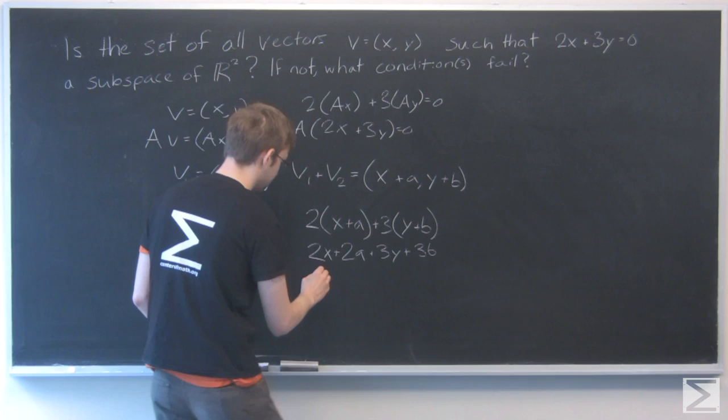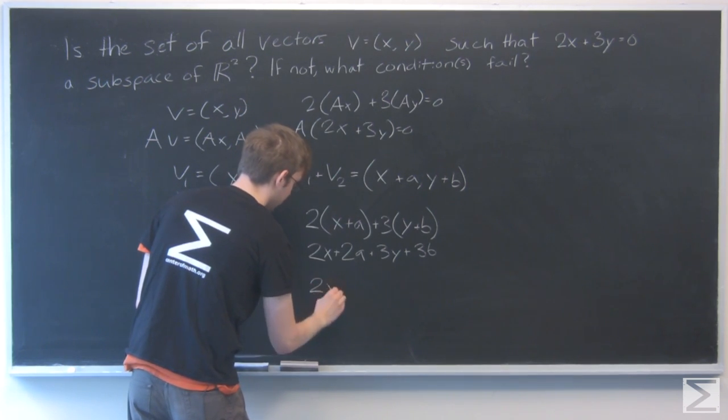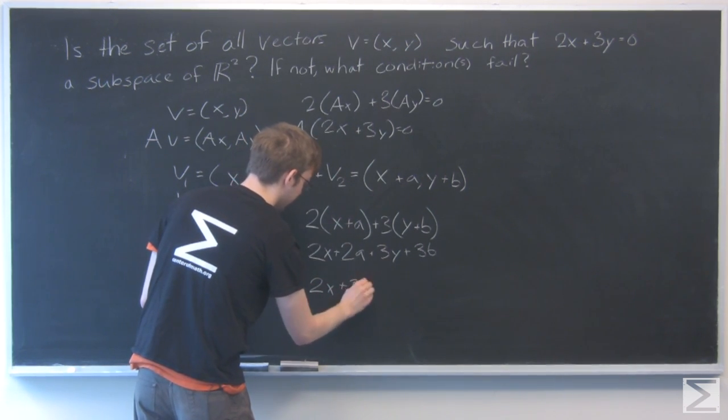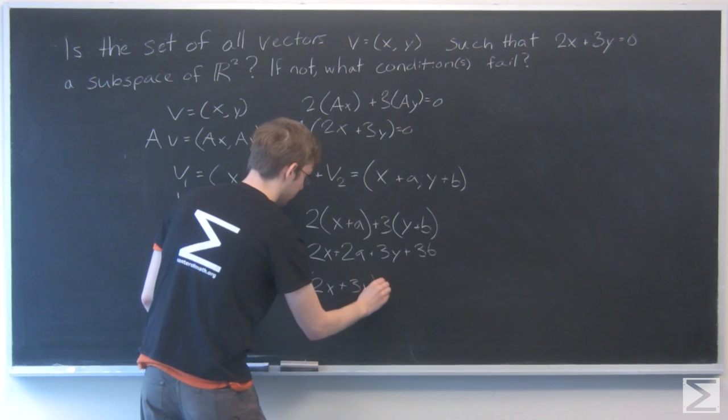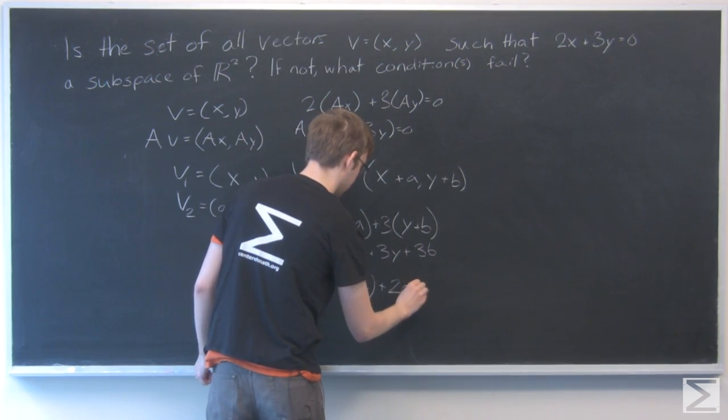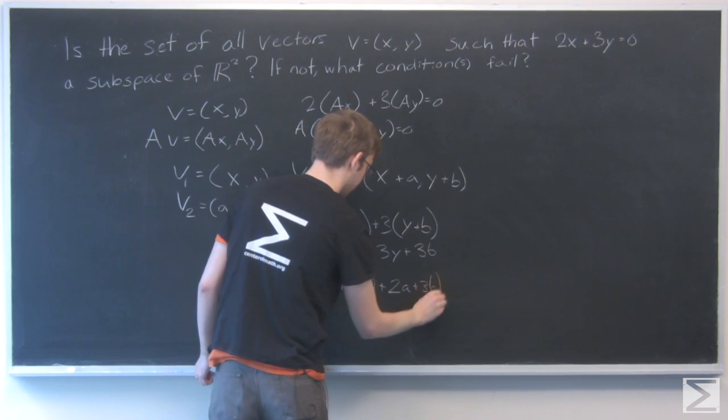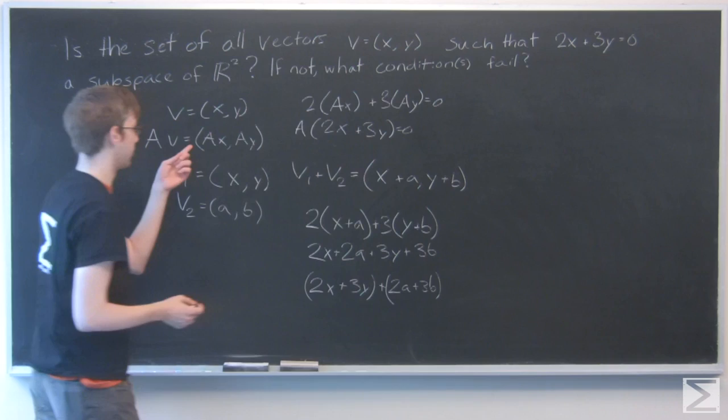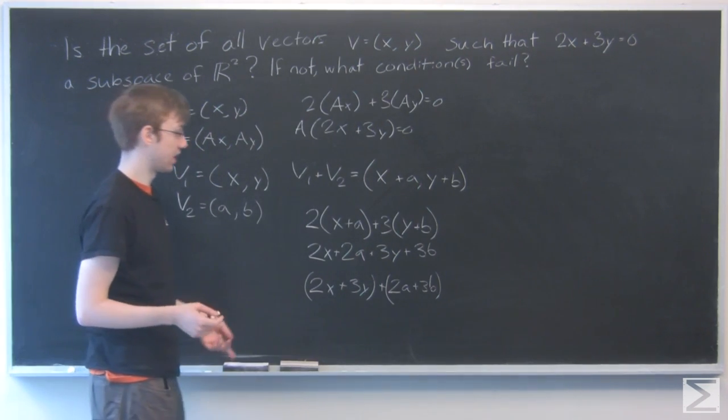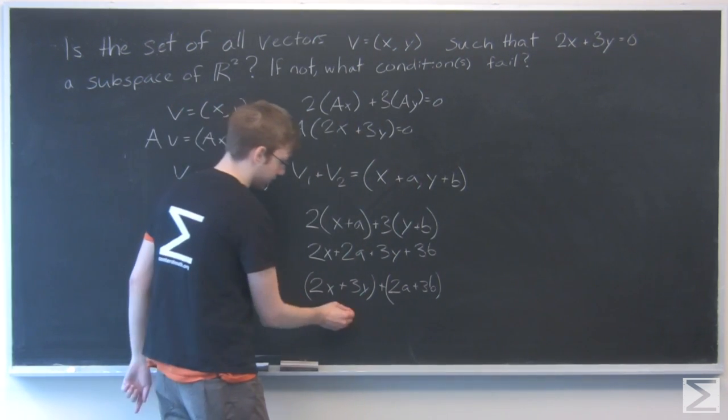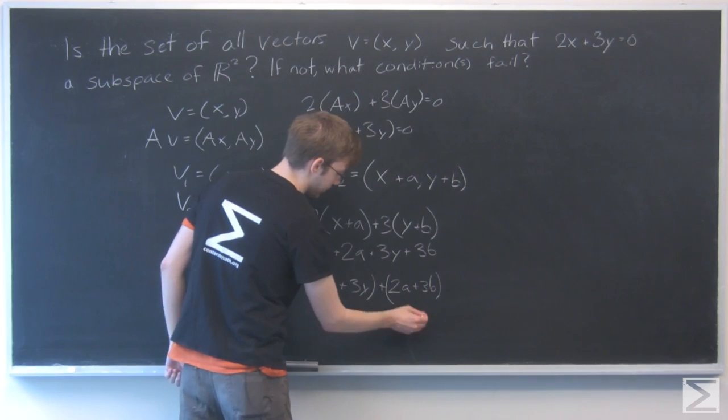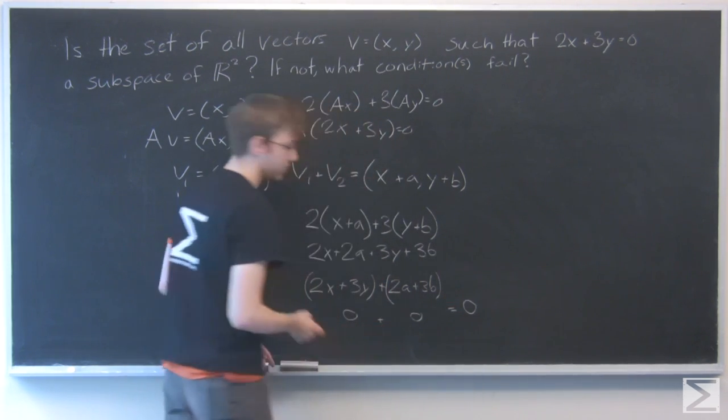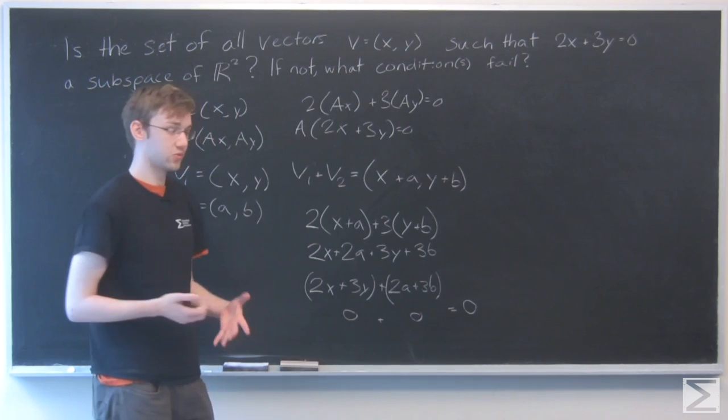Let's distribute this out. Rearranging, I see that I now have 2x + 3y + 2a + 3b. Because those were our original vectors, which we said were part of that set, this is just 0 + 0 = 0.